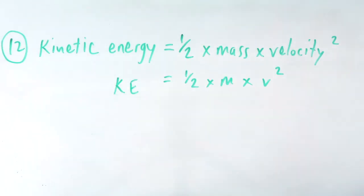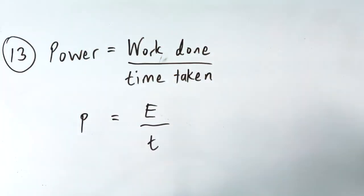Twelve, kinetic energy equals a half times mass times velocity squared. Thirteen, power equals work done divided by time taken.